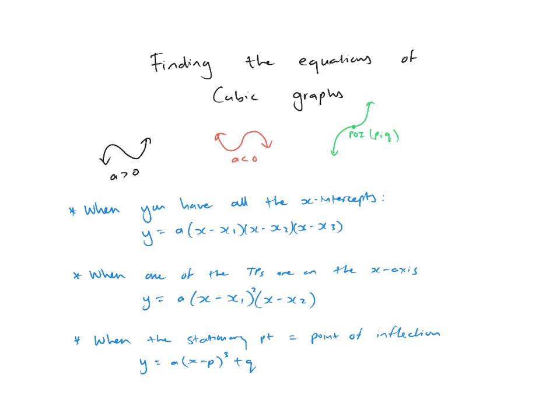And then we've got this green one — it kind of lets you think of a tan graph. That happens when the point of inflection is actually a stationary point. It's quite a unique one; it just goes in the other direction.